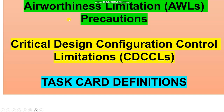I am taking a guide from the Boeing 737 Classic family. Chapter 5 contains: Airworthiness Limitations (AWL), precautions, Critical Design Configuration Control Limitations (CDCCL), and task card definitions — this is about the design of the aircraft. Go to your maintenance manual Chapter 5 and read this subject.